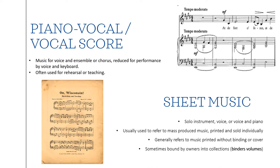Sheet music is mostly used to refer to a single, mass-produced work, but sometimes owners — especially in the 19th century — would have their collections bound together in a volume known as a binder's volume. These are always really interesting because it's mass-produced, commercially available music, but the exact collection and arrangement of the music in the binder's volume tells you something about the people who owned it and their tastes and abilities. You'll often see studies of binder's volumes, but you'll probably only encounter those if you work in a special collection or archive.